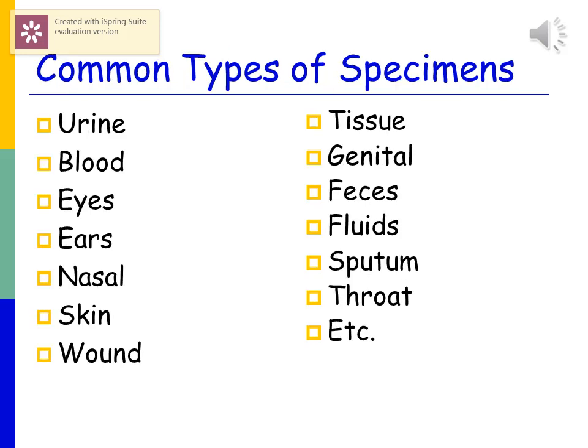The common types of specimens we see in a clinical microbiology laboratory include urine, blood, eye specimens, ear specimens, nasal specimens, skin, wound, tissue, genital, fecal, any type of body fluid such as spinal fluid, sputum, throat swabs, and various other types of specimens that you would occasionally get in the clinical microbiology lab.